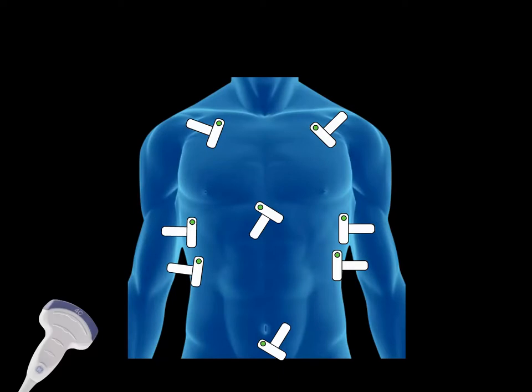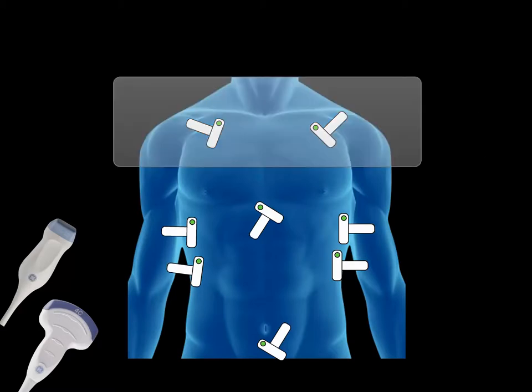Low-frequency curvilinear and phased array probes can be used to do the whole EFAST exam. For pneumothorax, a high-frequency linear probe is preferred since we are looking for the pleural line, which is a superficial structure. But if the linear probe is not available, curvilinear and phased array probes can be used.